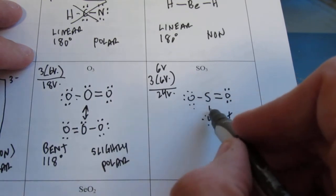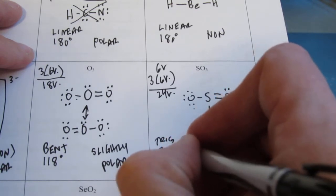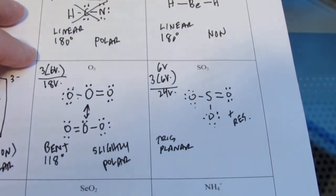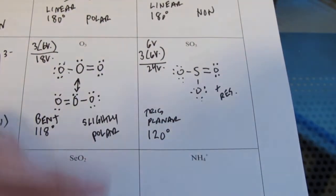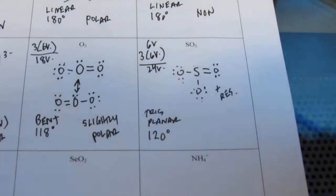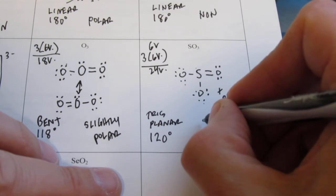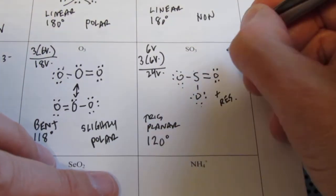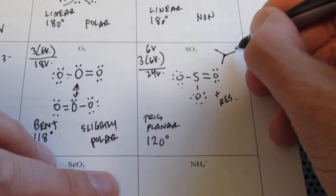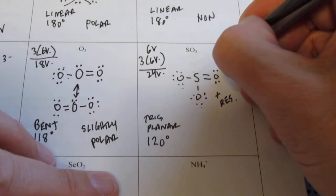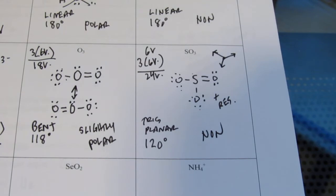We have 3 regions of electron density — we call that trigonal planar. They're all going to be on one plane, and the bond angle is going to be exactly 120 degrees this time. There are no non-bonding pairs on the central atom to mess with that bond angle, so I expect 120. The dipoles would cancel — use your spaceship analogy. With 120-degree angles, you have a dipole going that way, that way, and that way, and they all cancel. So that molecule I would expect to be non-polar.